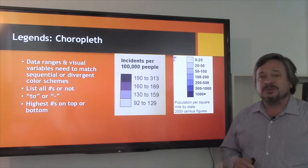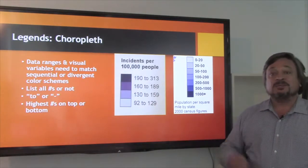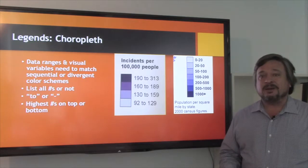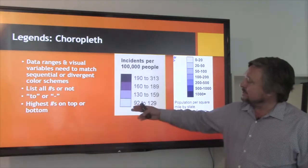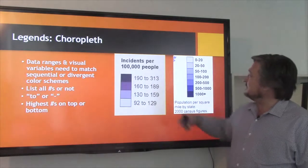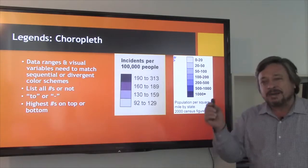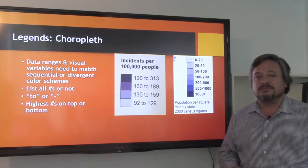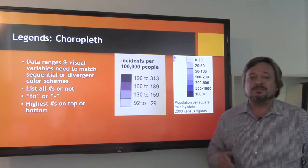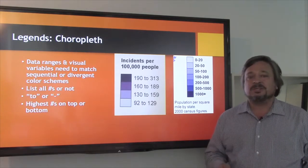The first one we're going to look at is a choropleth map. They usually show density by area, which is what choropleths are tied to. We'll often see varying degrees of saturation within color or pattern thickness, so we're looking at quantitative types of visual variables. Data ranges and visual variables need to match sequential or divergent color schemes.